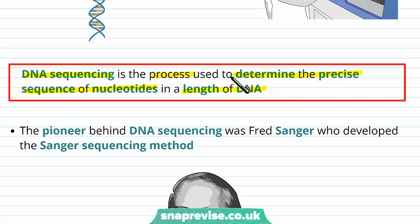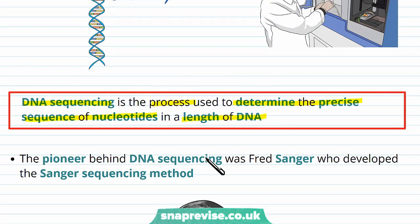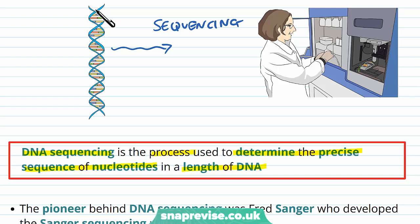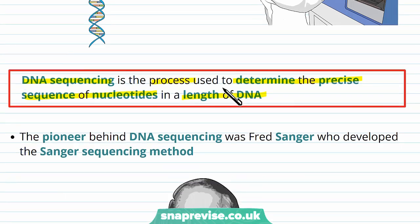Remember, DNA is there to contain the instructions to make all the proteins of an organism's body. The DNA contains many millions, and sometimes many tens of millions, of nucleotides along its length. Knowing the exact order and sequence of these is what we work out through DNA sequencing.